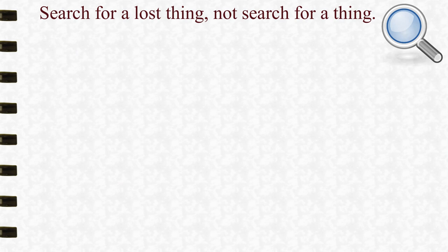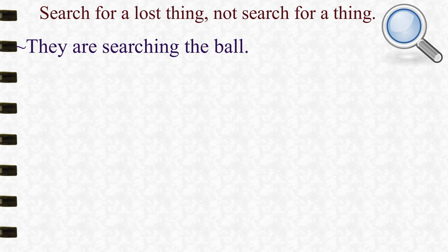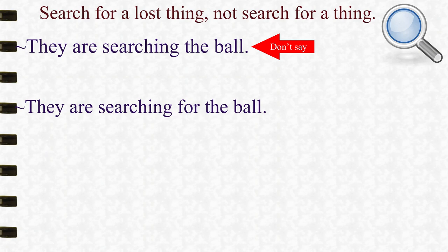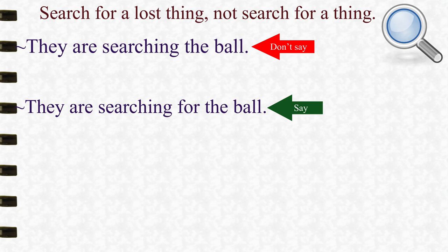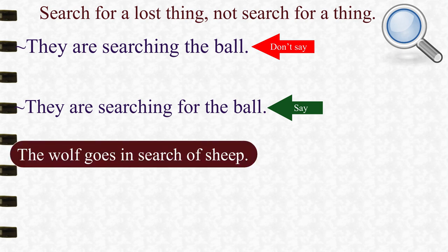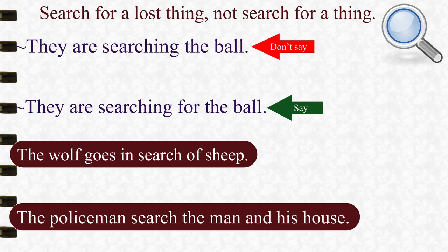Our first sentence is: 'They are searching the ball.' But when we search for a lost thing, the correct form is: 'They are searching for the ball.' We also use 'in search of' — for example, 'The wolf goes in search of sheep.' We also use 'to search,' which means to look in one's pocket or house — for example, 'The policeman searched the man and his house.'